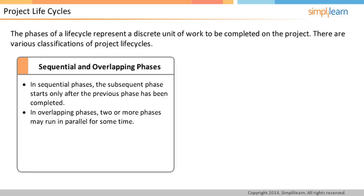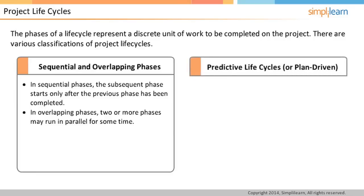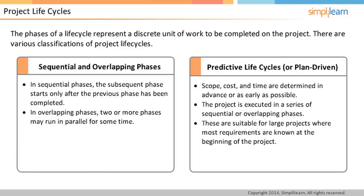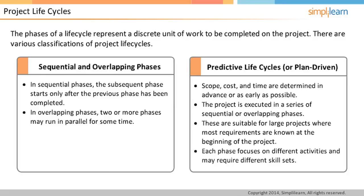The other way of classifying lifecycles is how they go about the process of planning. In predictive lifecycles, there is a large upfront planning phase where all the details of scope, cost, and time are planned before beginning the subsequent phases. These phases are then executed in either sequential or overlapping modes. They are suitable for large projects where all the requirements are likely to be known in advance. Another feature of predictive lifecycles is that each phase may require people with different skill sets. For example, traditional software development lifecycle has phases like requirements, feasibility, planning, design, construction, testing, and transition.